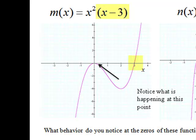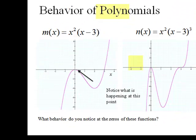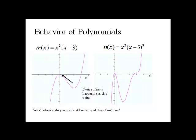Now, if we look at what's happening at three, we see that it's going straight through. Now, let's take a look at n of x.